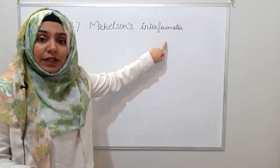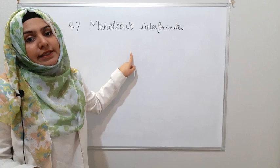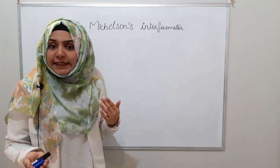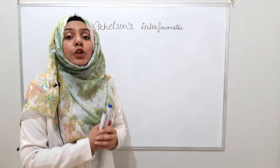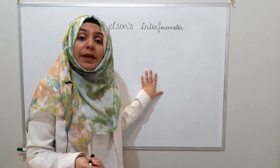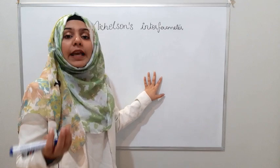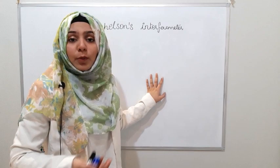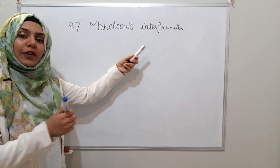There is a very important point, and it is very important for MCQs. In entry tests, different universities ask: why are we using Michelson's Interferometer while the Young's Double Slit experiment is doing the same work and also generating an interference pattern? So let's start with that.